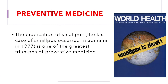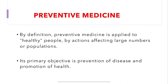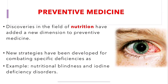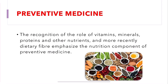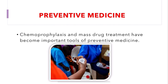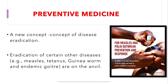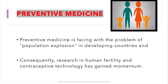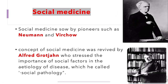In preventive medicine, the main differentiating point is that it affects a large number of the population. The eradication of smallpox is a triumph for preventive medicine. A new dimension of nutrition was added, deficiency disorders were discovered, the role of vitamins and nutrients was emphasized, insecticides were discovered for vector-borne disease control, chemoprophylaxis was introduced, screening procedures were started in the 20th century, and we studied population explosion, contraceptives, and the three levels of prevention. Now we move to the last part: social medicine.